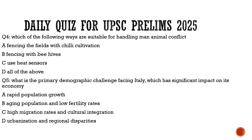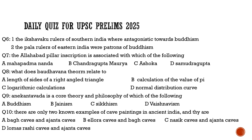Question five: What is the primary demographic challenge facing Italy that has a significant impact on its economy? We discussed this in our current affairs session in the context of Indian migrants in Italy. The options are rapid population growth, aging population and low fertility rates, high migration rates and cultural integration, or urbanization and regional disparities. The correct answer is option B: aging population and low fertility rates.